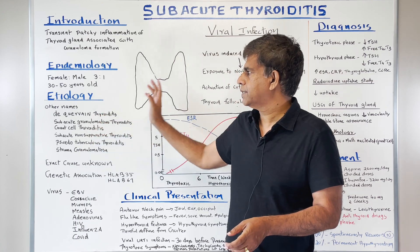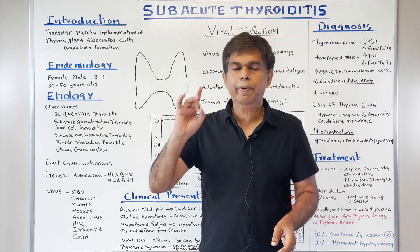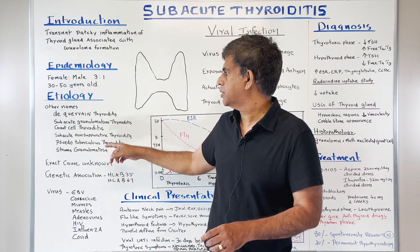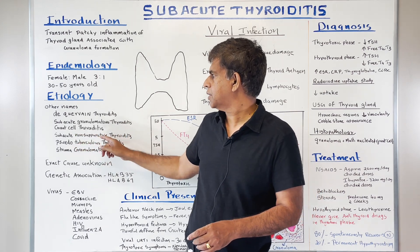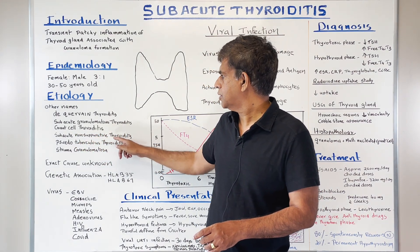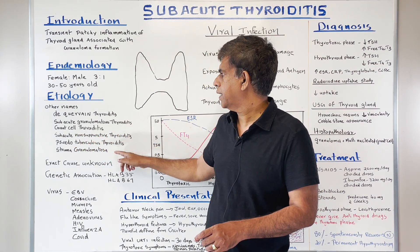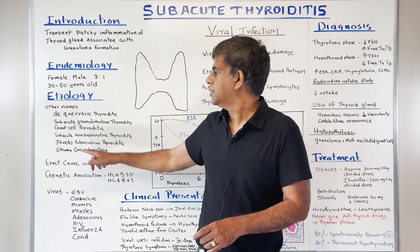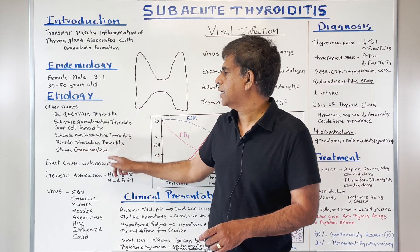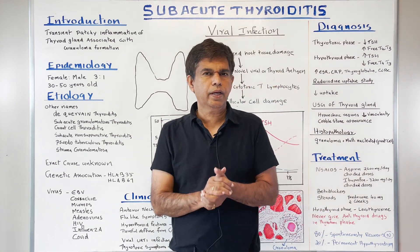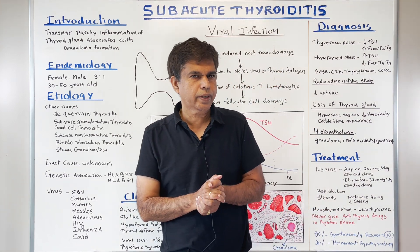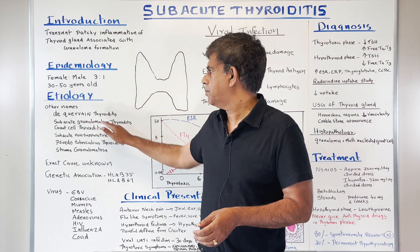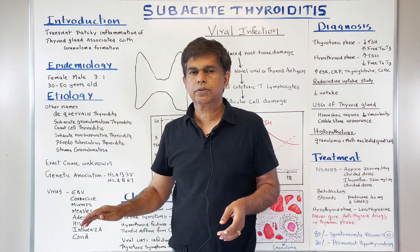Going back to the other names: de Quervain's thyroiditis, subacute granulomatous thyroiditis, giant cell thyroiditis, subacute non-suppurative thyroiditis, pseudo-tuberculous thyroiditis, and struma granulomatosa. There are many different names out there, but the two key ones to know for exams are de Quervain's and subacute granulomatous thyroiditis.